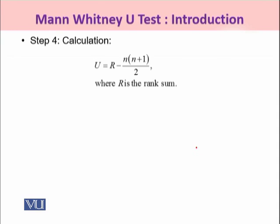Step 4 uses the formula: U = R − N(N+1)/2. Here, R is the rank sum of the sample that has the smaller rank sum compared to the other, and N represents the size of that same sample — the one with the smaller rank sum. Using R and N together, you calculate the value of U.